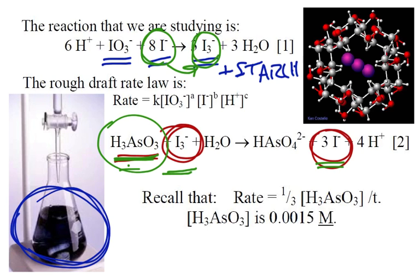So the rate of our reaction, which is supposed to be the rate of iodide, is really we can calculate it by taking the rate of how long it takes for the 0.0015 molar arsenious acid to be used up.